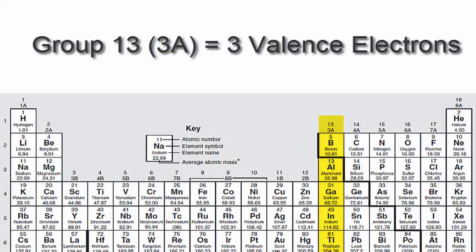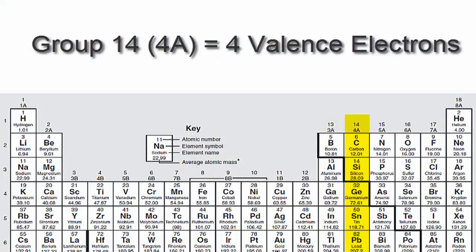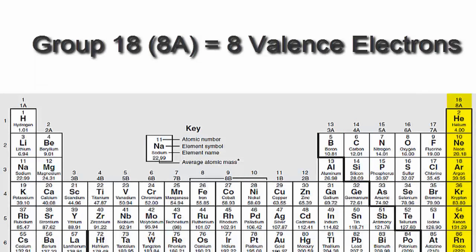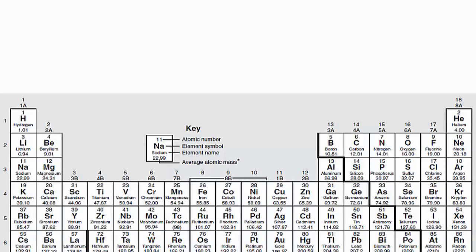We'll go to 13 or 3A, which have three valence electrons, then 14 or 4A, each of those elements in group 14 or 4A have four valence electrons, all the way up to group 18 or 8A, which have eight valence electrons.